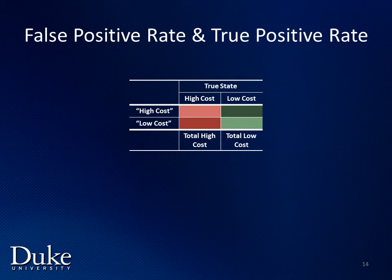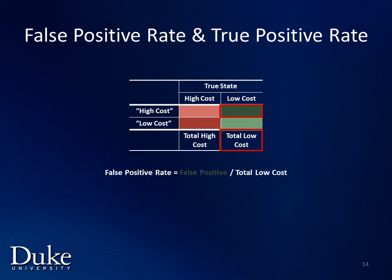Now we will take the information in the tables for the two cut points and summarize it in graphical ROC curve form. Before we can do that, we need to extract two values: the false positive rate and the true positive rate. The false positive rate is equal to the number of false positives divided by the total number of low cost individuals.